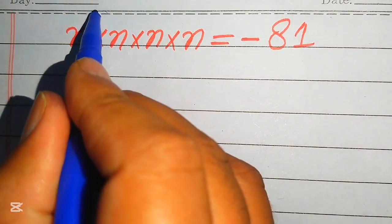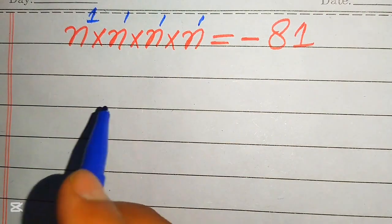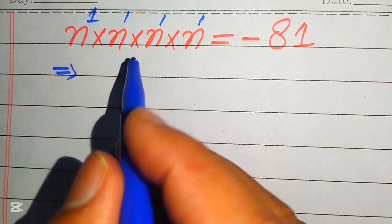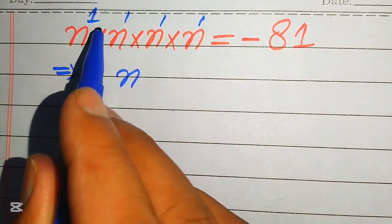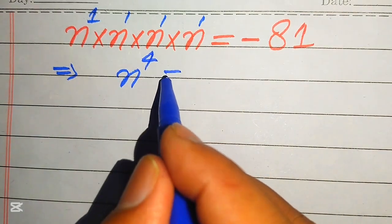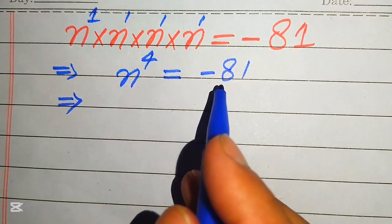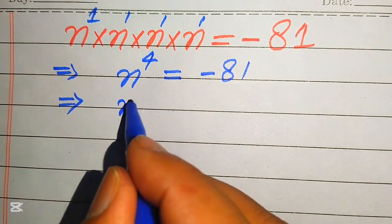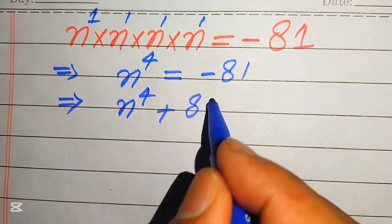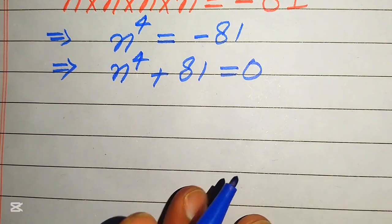First, you can see that the bases of all four n's are the same. This means that when bases are the same we add the exponents, and when you add ones four times it becomes n to the power of 4. This equals minus 81. In the next step we move minus 81 to the left-hand side, giving us n to the power of 4 plus 81 equals 0.